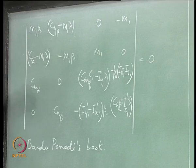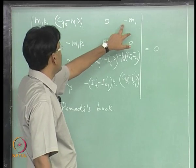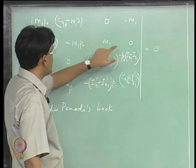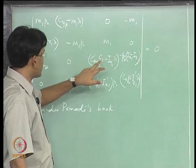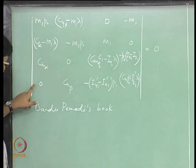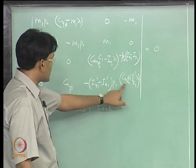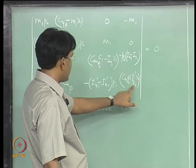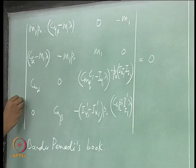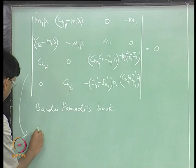We are going to end up with a quartic equation in lambda. M1 P0 CY beta minus M1 into lambda 0 minus M1 Cz alpha minus M1 lambda minus M1 P0, M1 0, CM alpha 0, CMQ C1 minus IY1 lambda minus P0 Ix1, P0 into P0 CnR into B1 minus IZ1 prime into lambda. What we are going to see is a characteristic equation which is looking something like this.